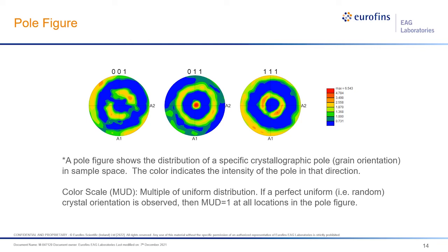Another standard analysis we provide is texture analysis for each sample. Here is a pole figure of the three major zone axes, familiar to those who use XRD services. It's important to remember that EBSD data collects full 3D crystal lattice orientation information, so each pole figure is a 2D projection — reduced information. If we want texture information along other directions or crystallographic planes, we can extrapolate that from the raw EBSD data as well.